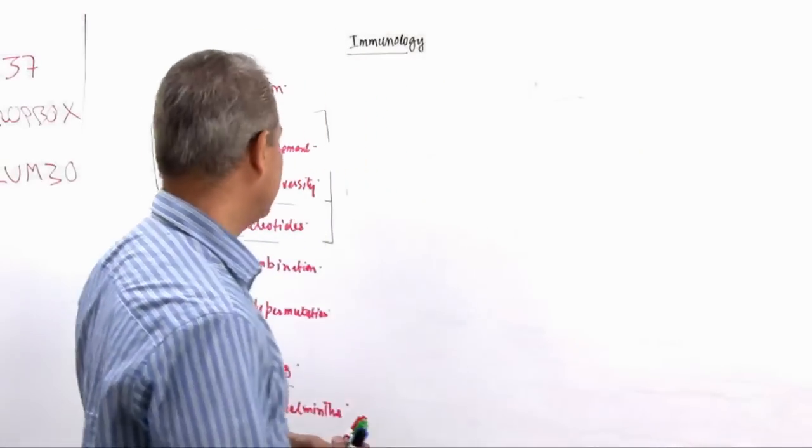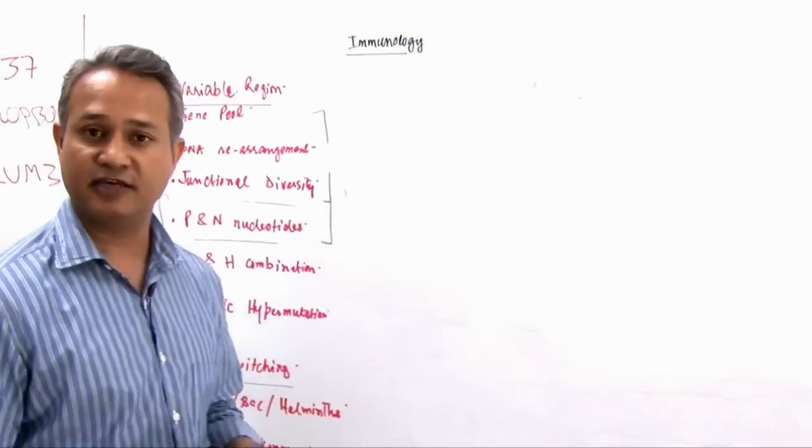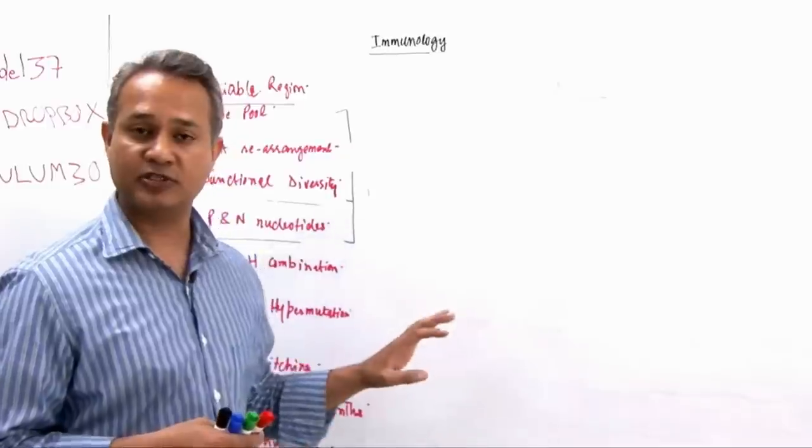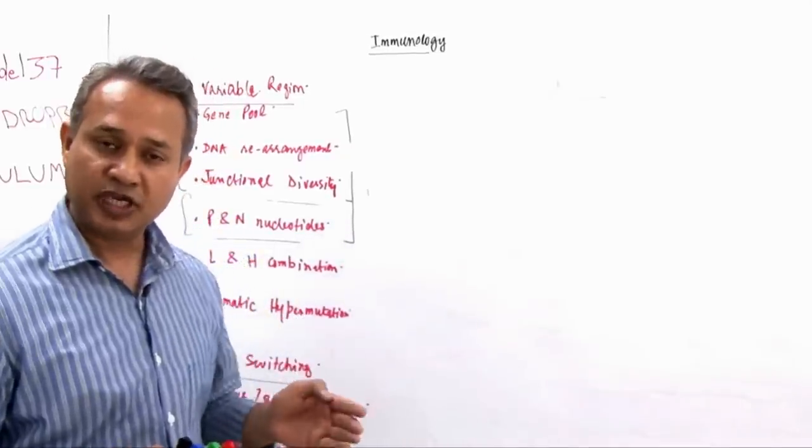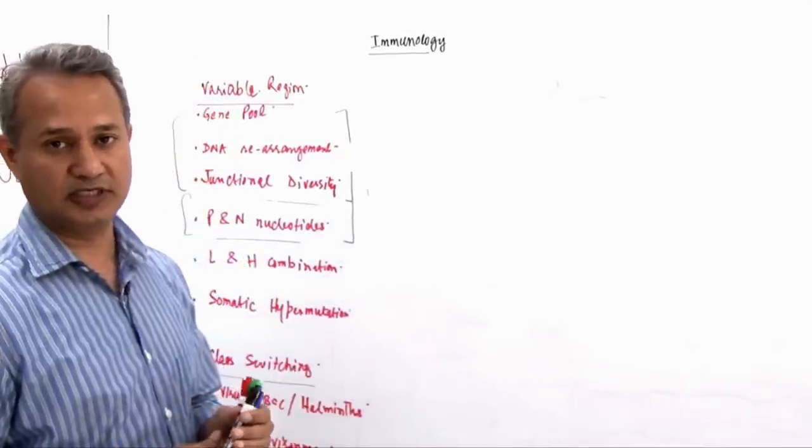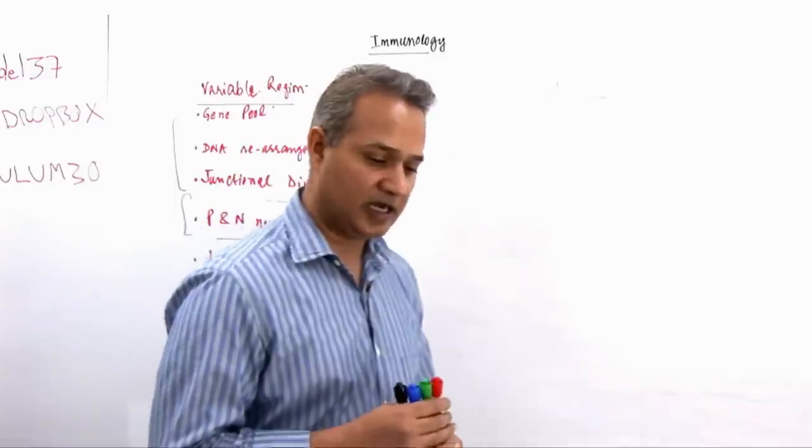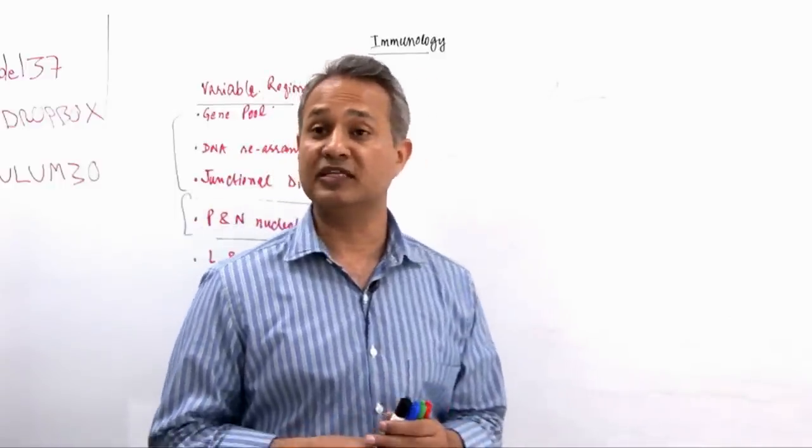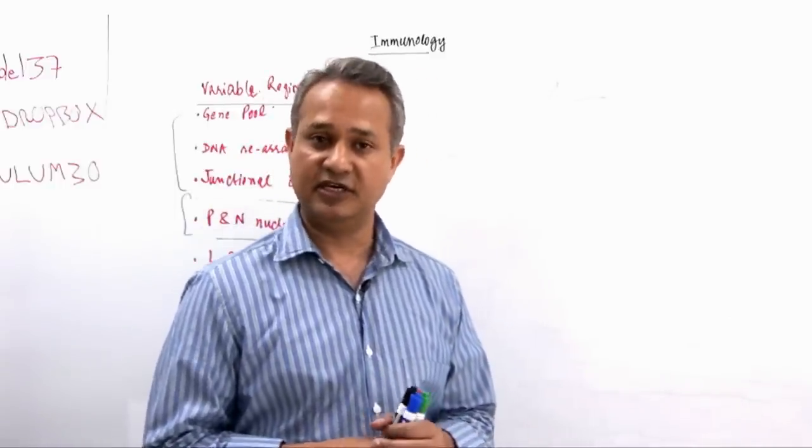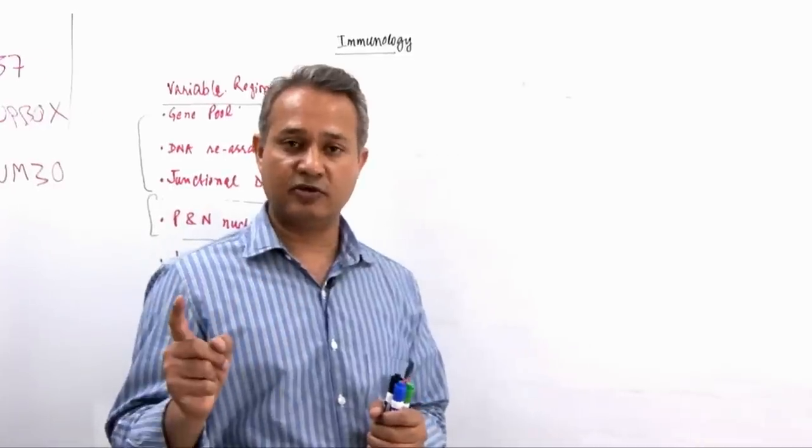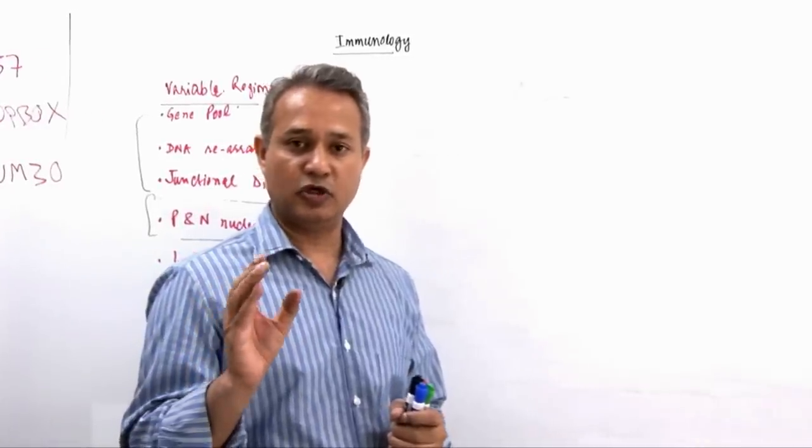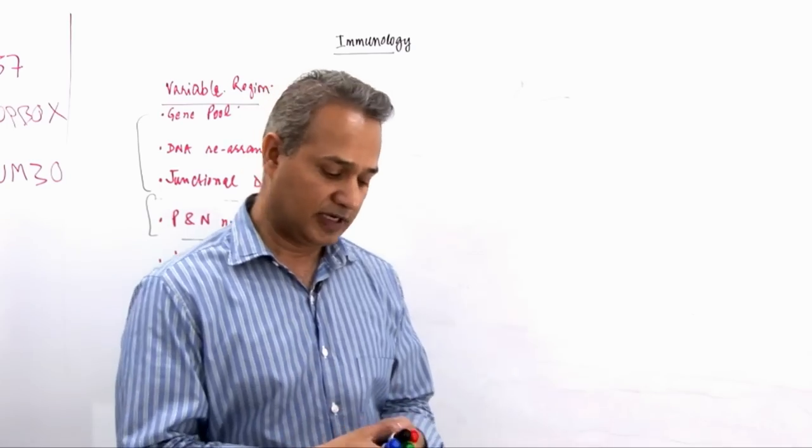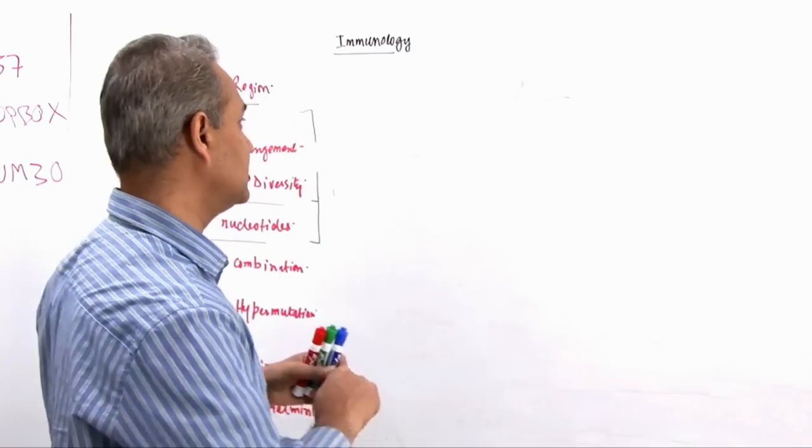Hey guys, welcome back. We are talking about genetics and diversification, and now we're going to talk about class switching or isotype change within the immunoglobulins. This should be our last lecture on the B cell and immunoglobulin structure and diversity. After this, we will go to immunoglobulin types and functions. Let us talk about the class switching mechanism.